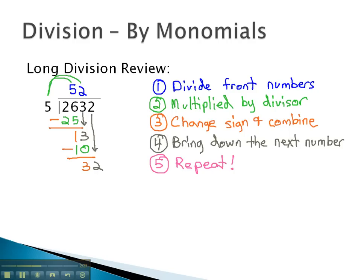We divide 5 into the 32 and it goes in there 6 times. 5 times 6 is 30. This is multiplying by the divisor. And we change the sign and combine to get 2.